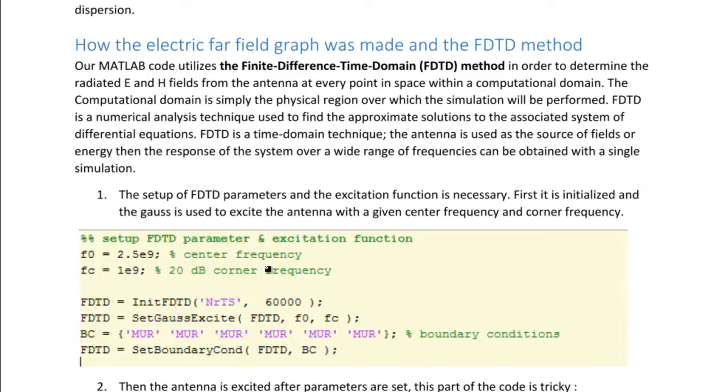The setup of the parameters and the excitation function is necessary. First, it is initialized and the Gauss is used to excite the antenna with a given center frequency and corner frequency. The figure shows how the setting up of the parameters are done.